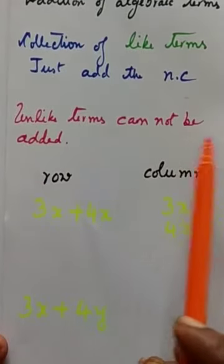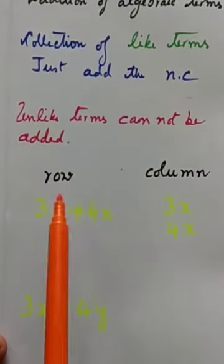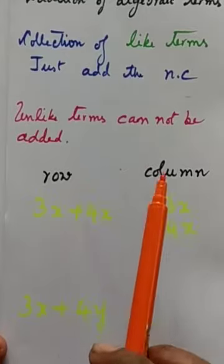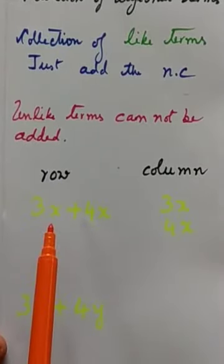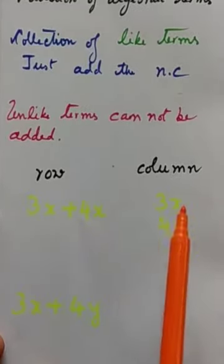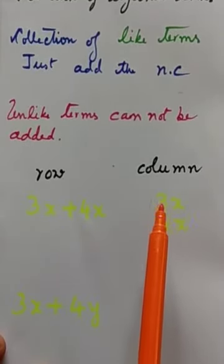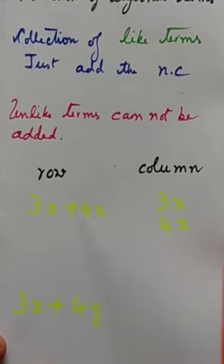Unlike terms cannot be added. There are two methods in addition. Row method by writing side by side. Column method by writing one below the other.